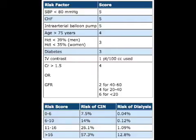The risk factors include: hypotension with systolic blood pressure less than 80, evidence of congestive heart failure, presence of an intra-aortic balloon pump, age older than 75, anemia with a hematocrit less than 39% in men or 35% in women, diabetes, and amount of contrast used. With our 64-slice scanner, the typical contrast administered is between 50 and 100 cc. You also factor in the creatinine or GFR.